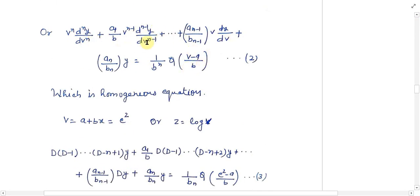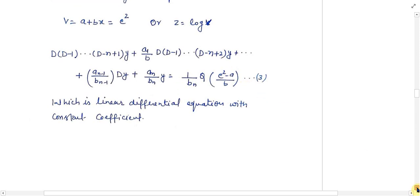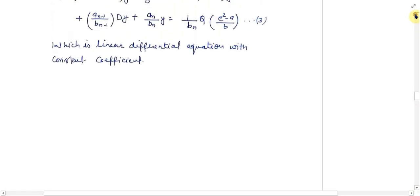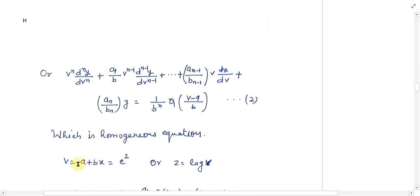Aur dy/dv, d^(n-1)y/dv^(n-1), aur d^n y/dv^n ki values hum is equation mein put karte hain aur simplify karte hain, to changing equation milti hai: D(D-1)...(D-n+1)y + (a1/b)·D(D-1)...(D-n+2)y + ... = Q, jo linear differential equation with constant coefficient hai, jise hum solve kar sakte hain. To aap dekhenge ki jo equations hum aaj padh rahe hain, (a + bx) coefficient wali hain, to in equations ko directly (a + bx) ki jagah e^z put karke solve kar lenge.